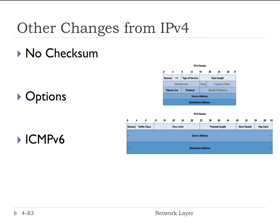The options were completely removed from the header, but they are still allowed — they get pushed into the payload, and the next header field can be set to point to them. So the next header could point to some more IP information, or it could point to the actual transport layer contained within it.